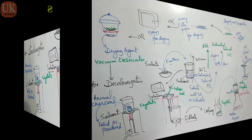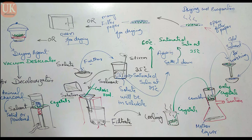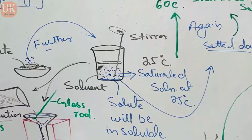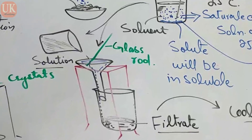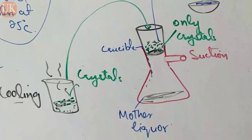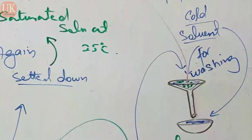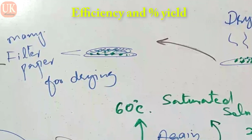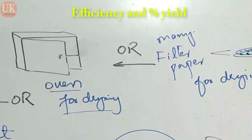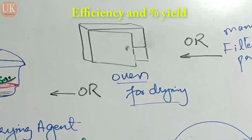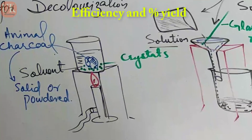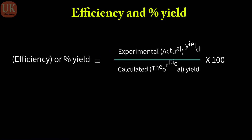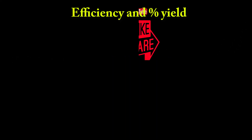Jo crystals haasil hoti hain, inhe pehle se judge karte hain ke kitni haasil hongi — quantitative analysis karke ye dekhte hain ke kitne grams crystals haasil honge. Isi ki buniyaad par percentage purity ka faisla hota hai. Jo aapne actually haasil ki — that is called experimental yield. Aur jo pehle calculate ki thi — that is called calculated yield. Ye tha aaj ka topic — crystallization kaise ki jaati hai aur crystallization kya hai.